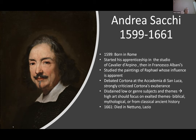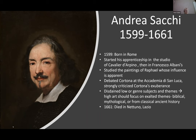Cortona was for that exuberance of figures, while Sacchi says it should be much quieter with fewer figures, so each represented figure is really valorized in the eyes of the beholder. He also disdained low or genre subjects — still life and landscapes — aspiring only to history painting, which was at the top of the hierarchy. He believed high art should focus on exalted themes: biblical, mythological, or from classical ancient history. He died in the Lazio, very close to Rome, in 1661.